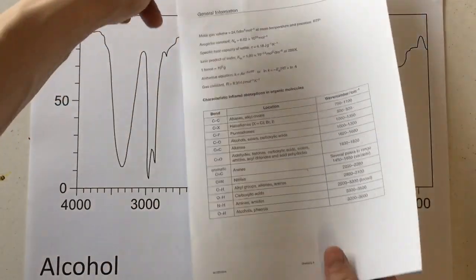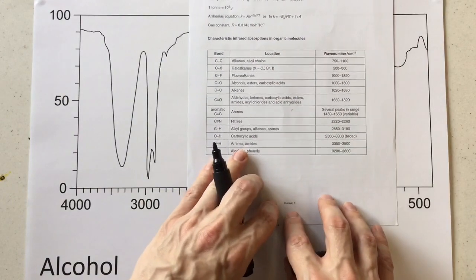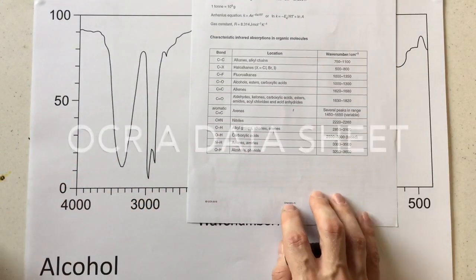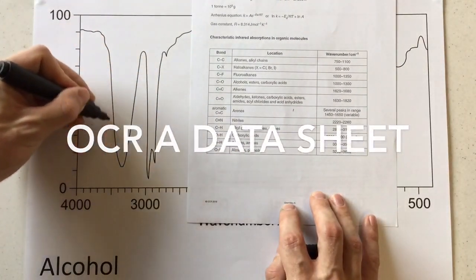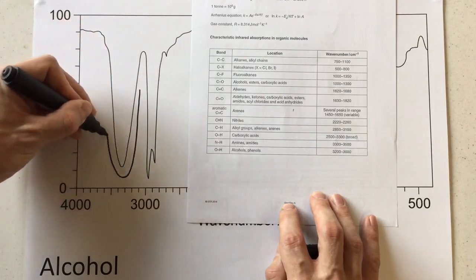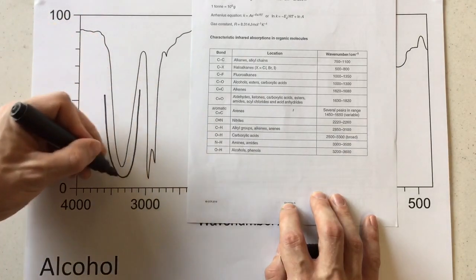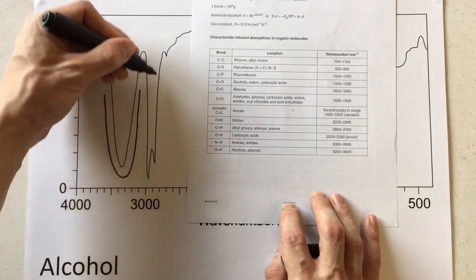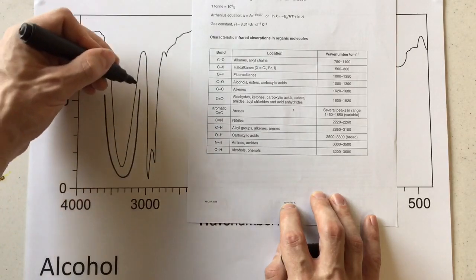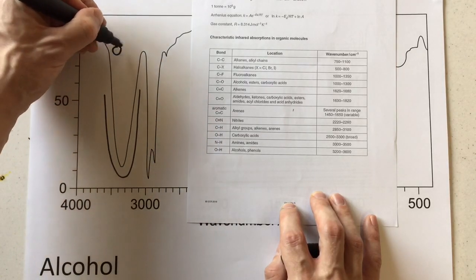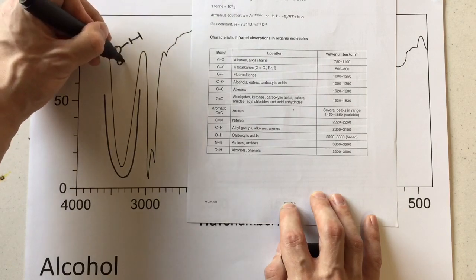Now don't forget, in the exam you will have your data sheet like so, so I'm just going to have that alongside this. You can see here this large scoop shape. Really, it's this scoop shape peak to the left of a thinner peak, which is often jagged. This is a big trademark for an OH alcohol.